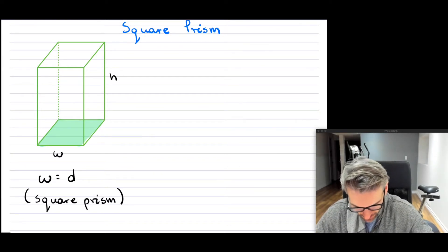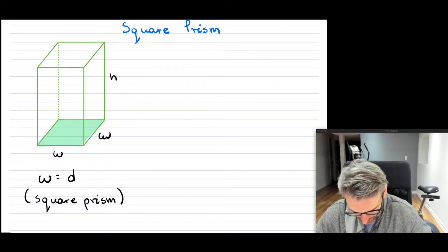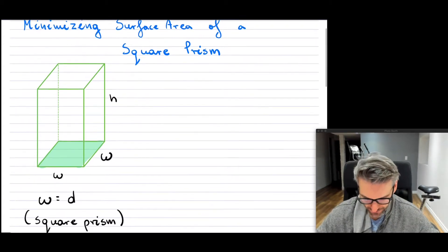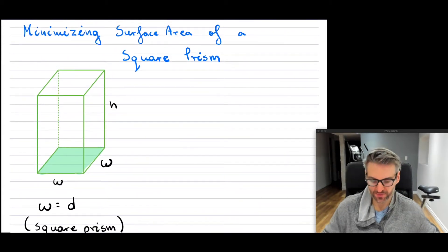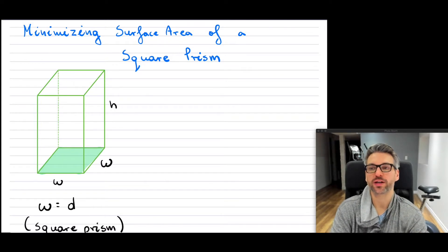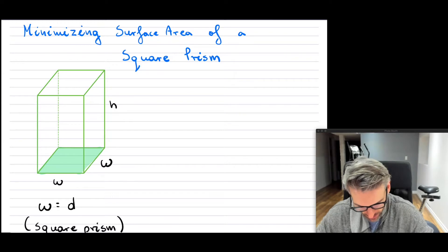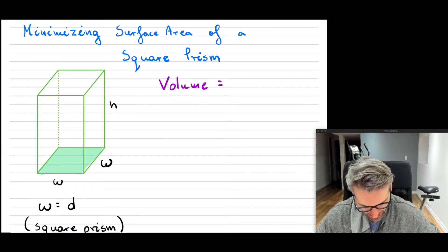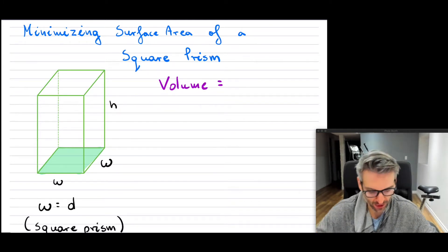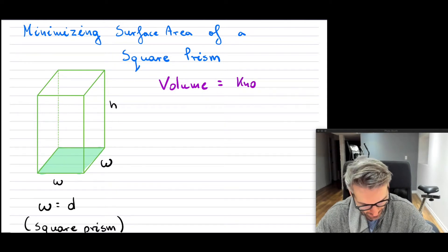Instead of d, I'm going to use w. So we have this particular prism, and what we want to do is minimize the surface area. We have one constraint given: we basically know what the volume is — the actual volume value is given.